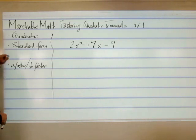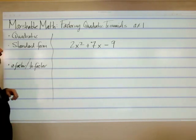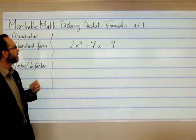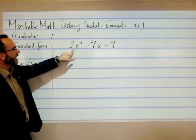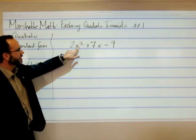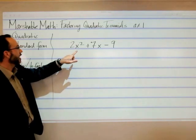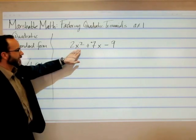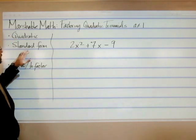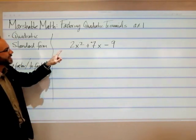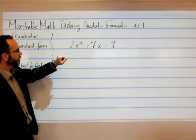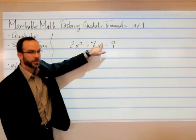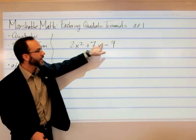Let's do a little bit of a review first. What is a quadratic? A quadratic is a polynomial whose highest exponent on the variable — in this case x — is 2. We call that the degree, so it's a degree of 2. And this here is an example of a quadratic. Standard form requires us to put it in descending degrees, so it's going to be an exponent of 2. This is x to the first, even though we don't write that exponent there.